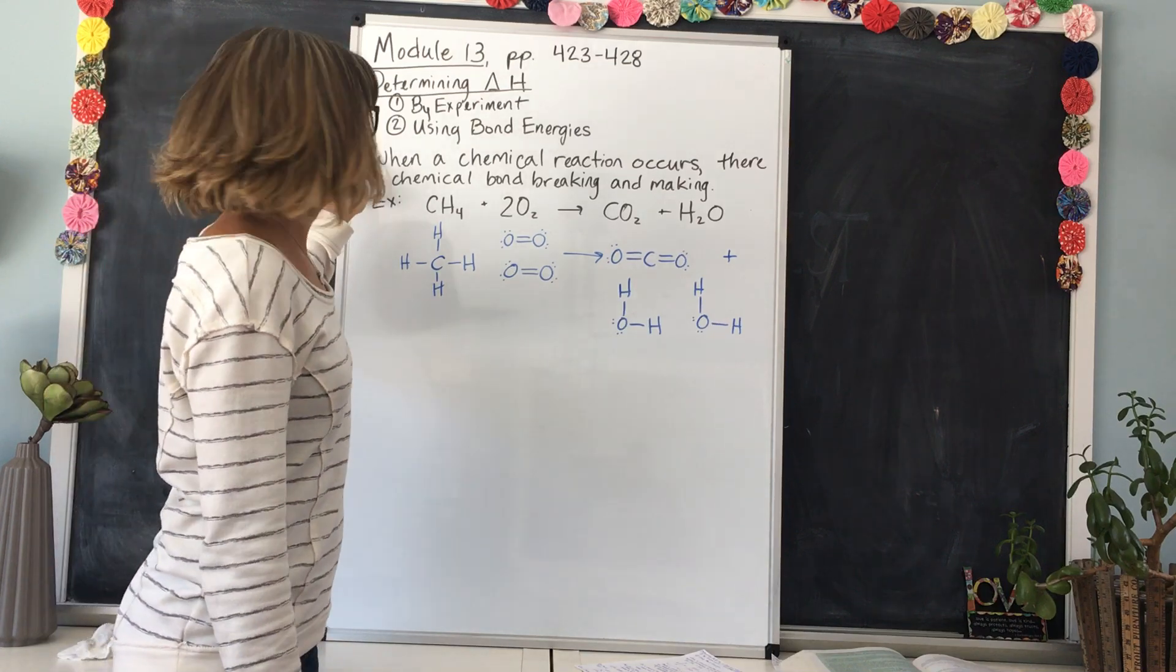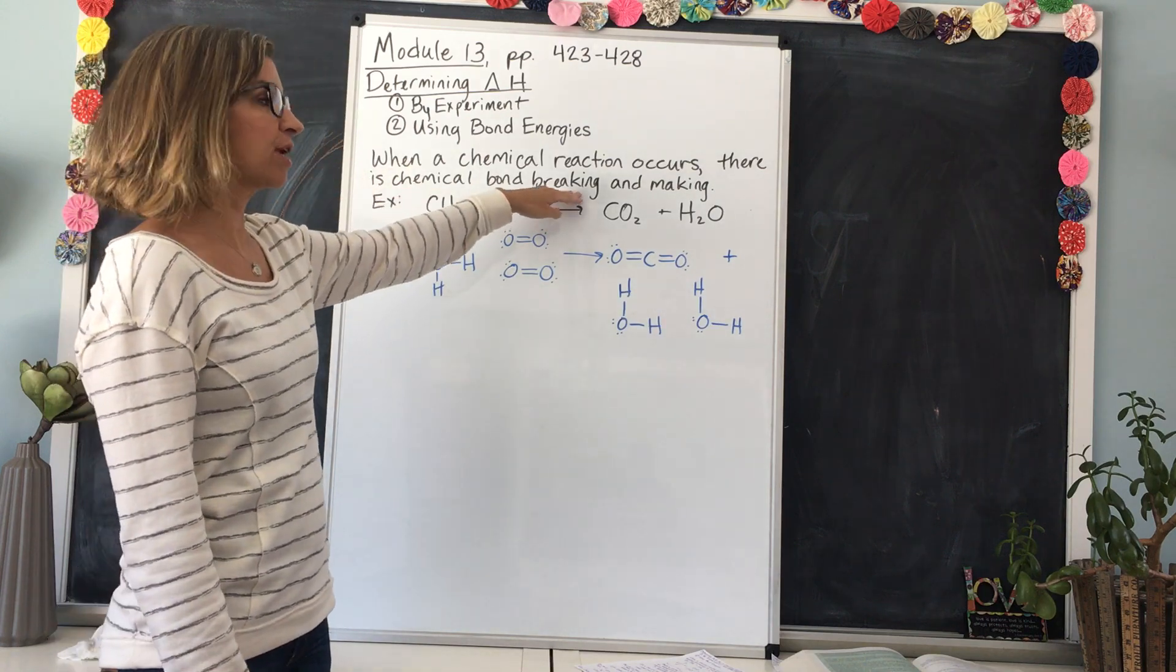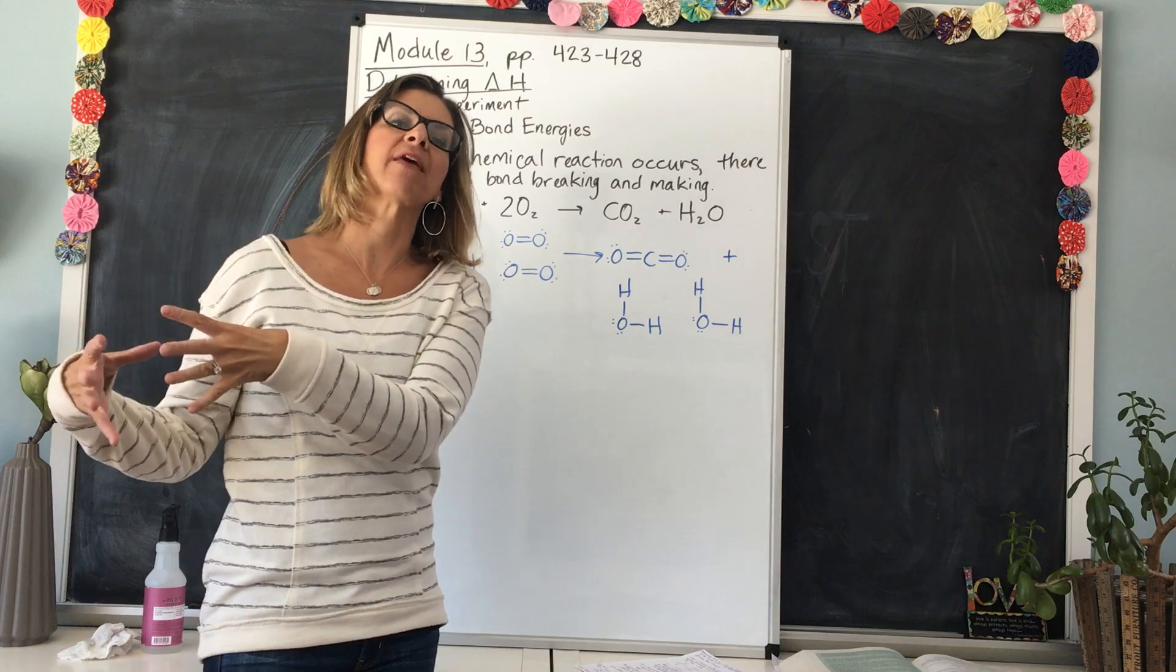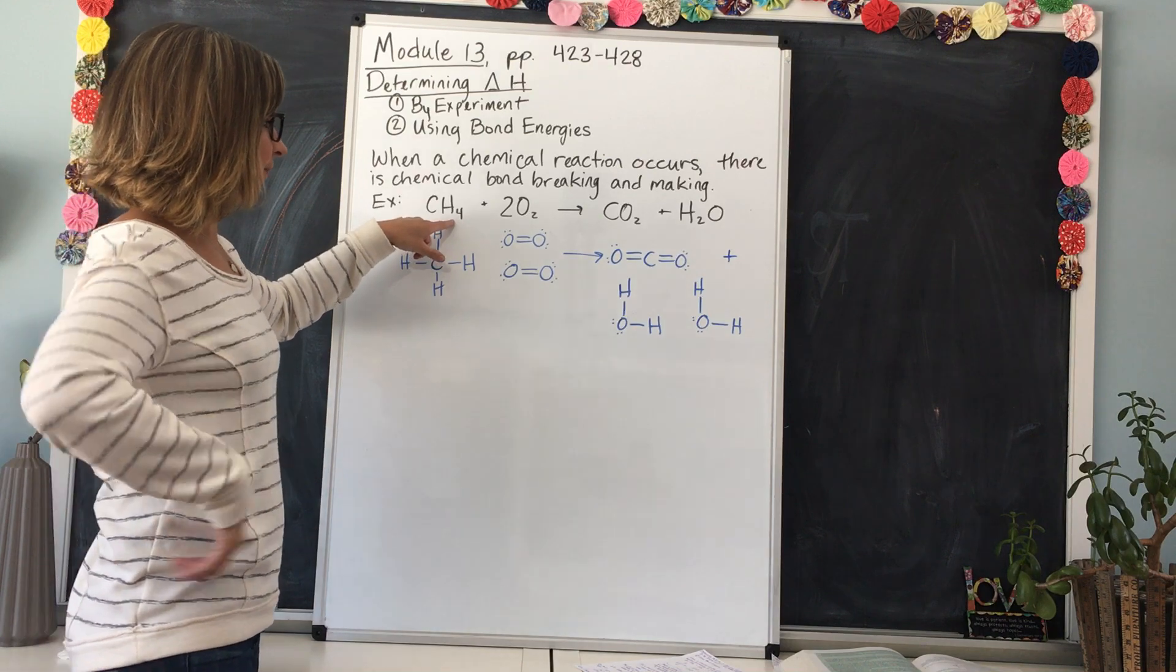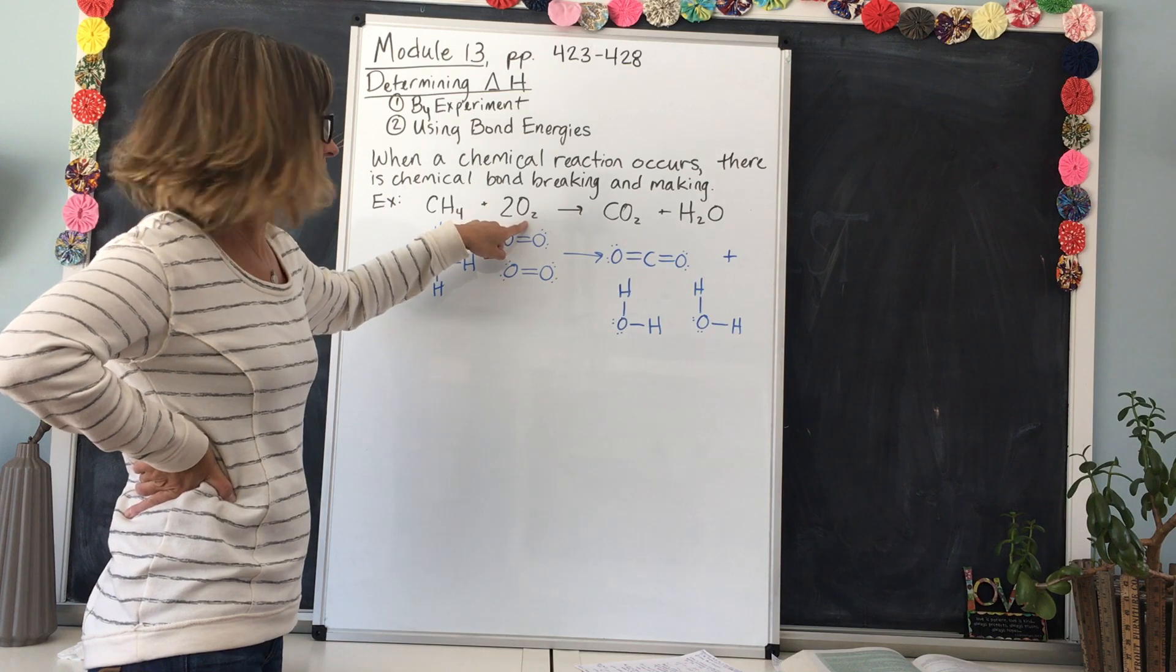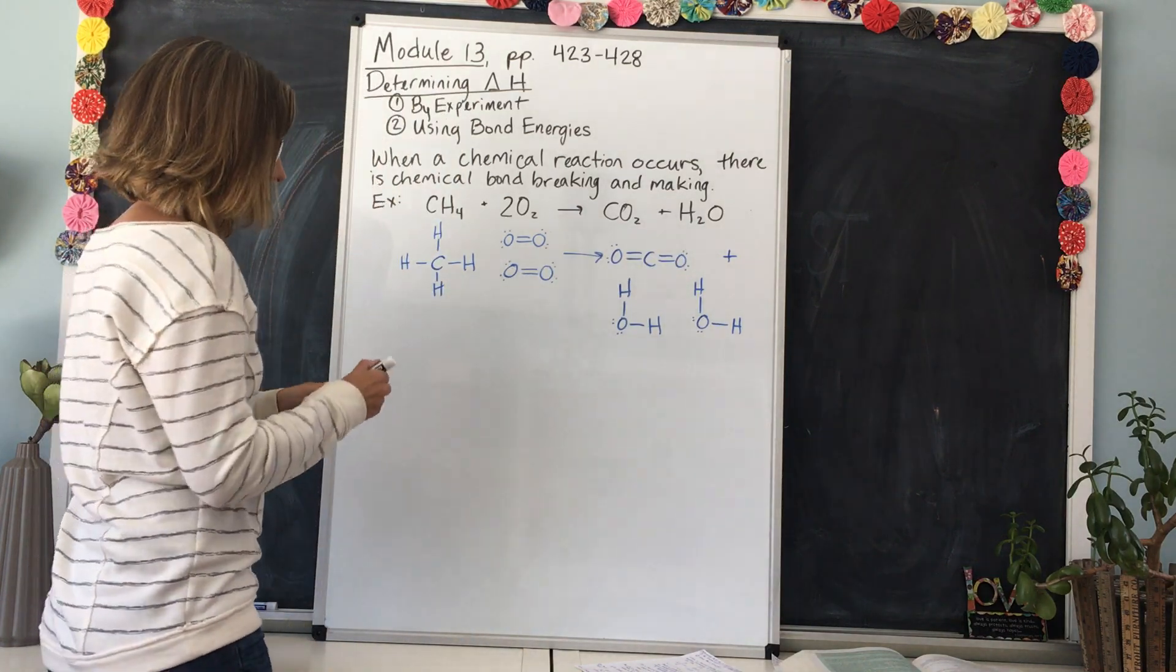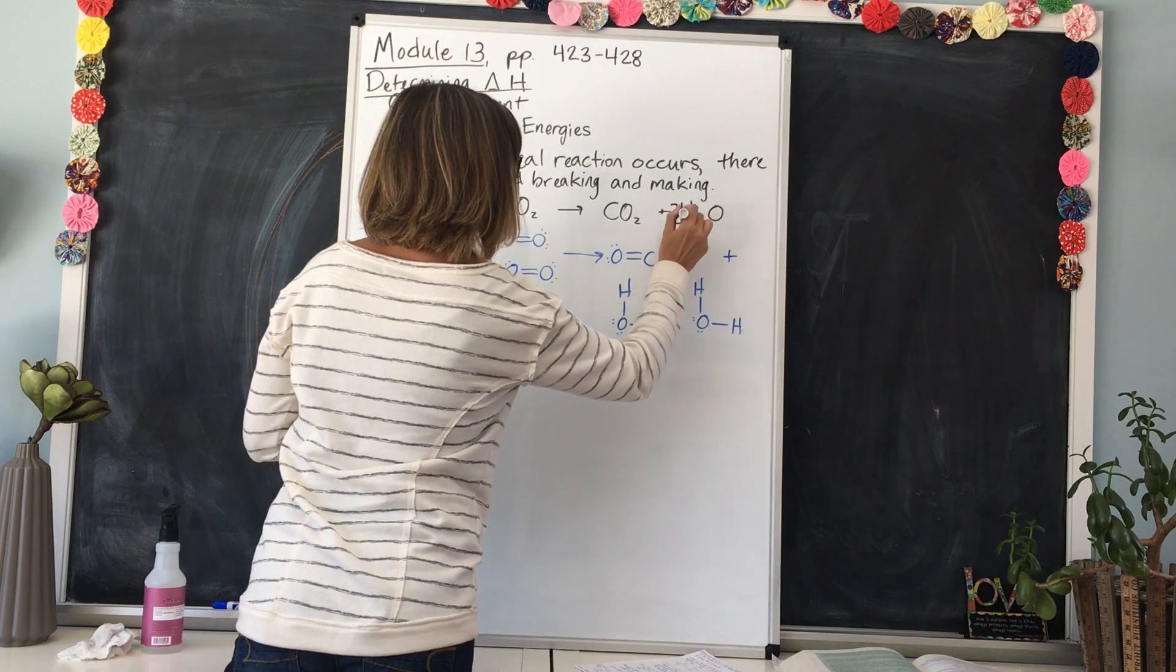First of all, we need to remember and understand that when a chemical reaction occurs there is chemical bond breaking and making as the reactants rearrange and break apart and then form into the products. Here's an example: we have CH4, which is methane, plus two O2 oxygen yields carbon dioxide and water.